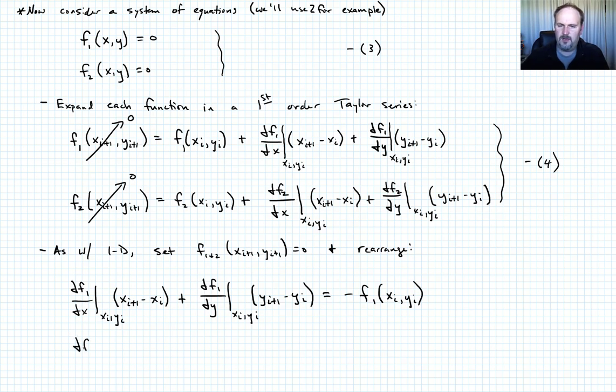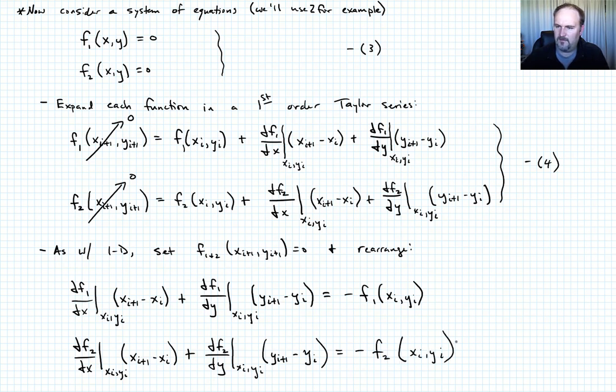Second equation looks very similar. So it will be partial of F2 with respect to x evaluated at x sub i y sub i times x sub i plus 1 minus x sub i, plus partial of F2 with respect to y evaluated at x sub i y sub i times y i plus 1 minus y of i. And that's going to be equal to negative F2 of x sub i y sub i. Let's collectively call these equations 5.